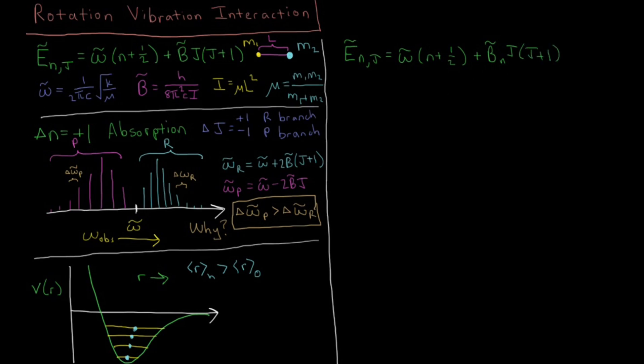Okay so we can describe this B of n of some rotational level n as the following. We can describe that as some equilibrium or kind of default rotational constant B̅ₑ minus α̅ₑ times n plus one half.